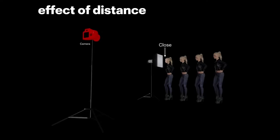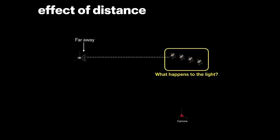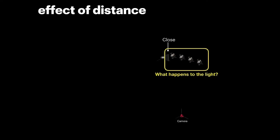Here we have an image showing a camera and four identical quadruplets, with a light source really close to the first model. The inverse square law is all about the distance between the light source and the object you are putting the light on. This image shows exactly this. When the light source is close versus far away, there is a difference — and that is the depth of light.